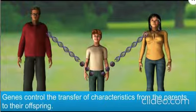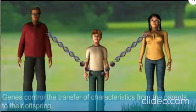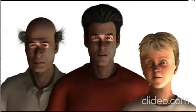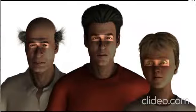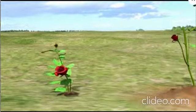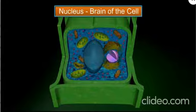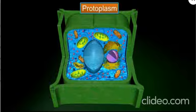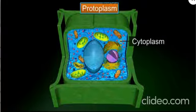Chromosomes are called the vehicles of heredity. They carry genes and help in the inheritance or transfer of characters from parents to their offspring. For example, the color of the eyes is a character transferred from granddad to dad and from dad to the son. Similarly, plants also transfer their characters to offspring through genes. The nucleus, in addition to its role in inheritance, acts as the control center of all the activities of the cell. Protoplasm refers to the entire living content of a cell, which includes the cytoplasm and the nucleus.